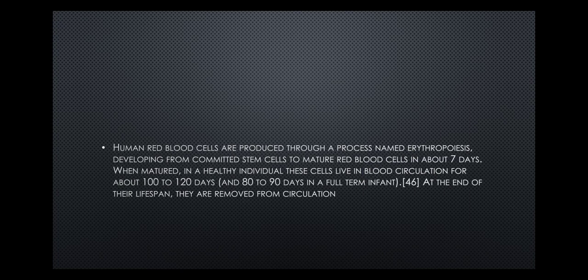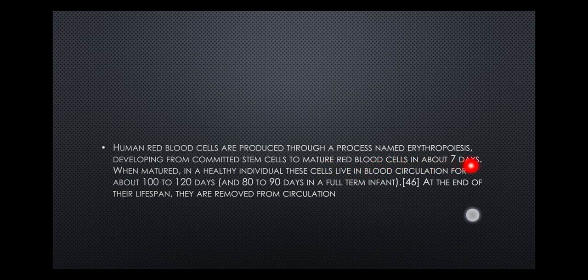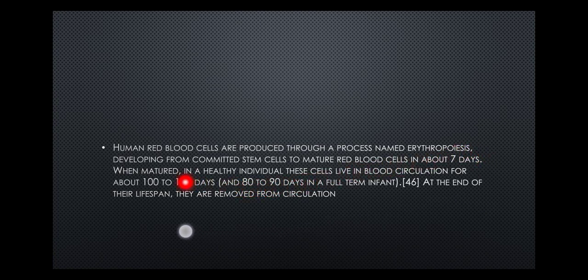Human red blood cells are produced through a process named erythropoiesis, developing from committed stem cells to mature red blood cells in about seven days. From birth to maturation takes about seven days, and then they live for about a hundred days. When matured, in a healthy individual, these cells live in the blood circulation for about 100 to 120 days.